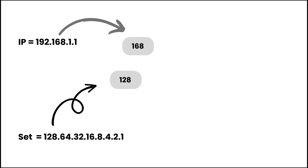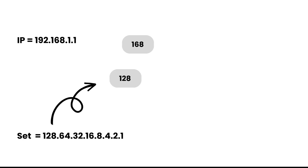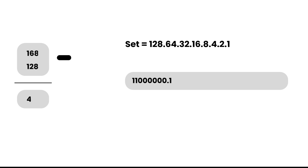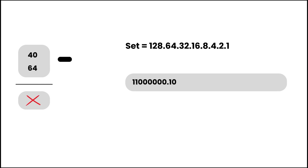Next, take 168 from the IP address and 128 from the set. When we subtract 128 from 168, we get 40. Since 128 can be subtracted from 168, we write 1 as the binary digit. Next, take 64 from the set — 64 cannot be subtracted from 40, so we write 0 as the binary digit.